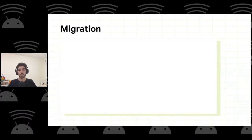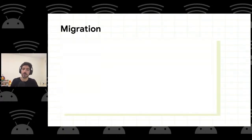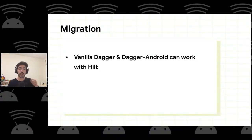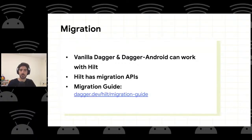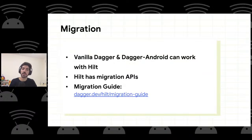Regarding migration — if you're currently using Dagger or Dagger Android, you can integrate Hilt incrementally since Hilt can work alongside Dagger and Dagger Android in the same project. There are migration APIs to ease the transition, and a migration guide available on the Dagger-Hilt website.